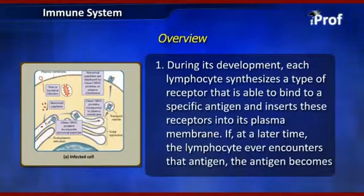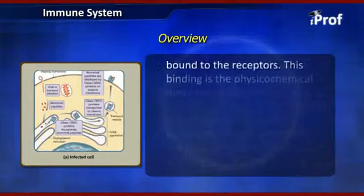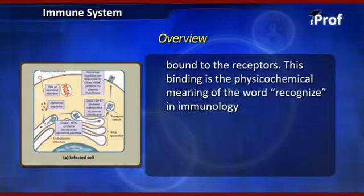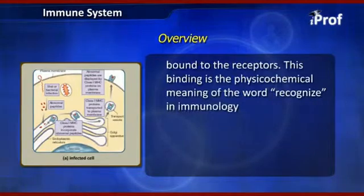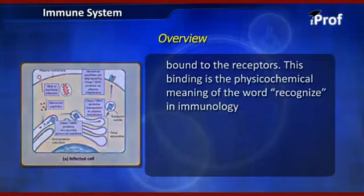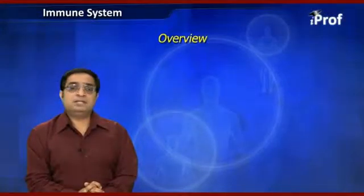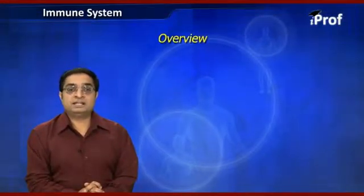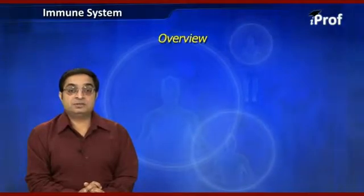When a lymphocyte encounters an antigen, the antigen binds to the receptors. This binding is the physiochemical meaning of the word 'recognized' in immunology. The ability of lymphocytes to distinguish one antigen from another is determined by the nature of their plasma membrane receptors. Each lymphocyte is specific for just one type of antigen, and in a typical person the lymphocyte population expresses more than 100 million distinct antigen receptors.